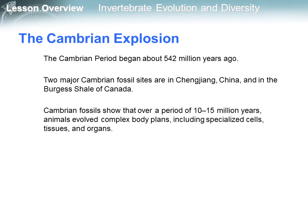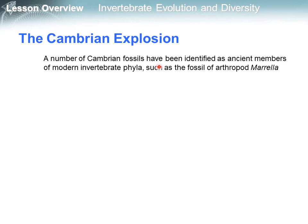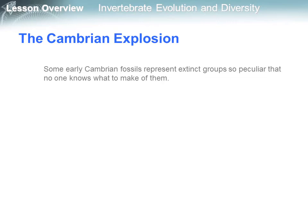Now let's see the Cambrian explosion. The Cambrian period began about 542 million years ago. Two major Cambrian fossil sites are in Chengjiang, China, and in the Burgess Shale of Canada. Cambrian fossils show that over a period of 10 to 50 million years, animals evolved complex body plans, including specialized cells, tissue and organs. A number of Cambrian fossils have been identified as ancient members of modern invertebrate phyla, such as the fossil of arthropod Marella.